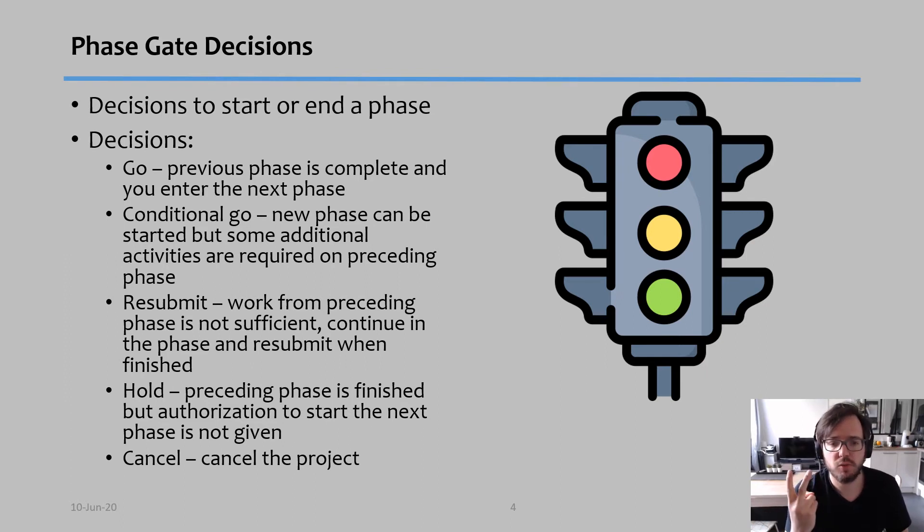You might also have second option, which is a conditional go. The conditional go states, all right, you can start phase two, but there's a couple of things I want you to change in phase one. So phase one is not done yet, but you can start phase two already. Option three, resubmission. This is when the work of the phase one in this case is not good enough and you have to go back and redo it. You are not authorized to start phase two and you must redo the phase one.